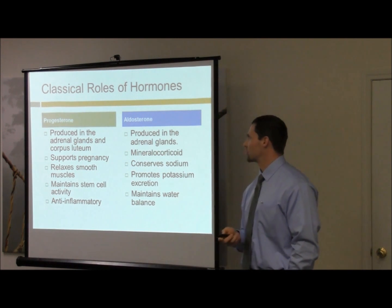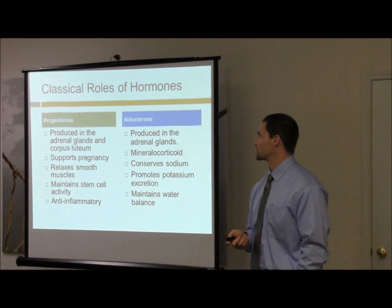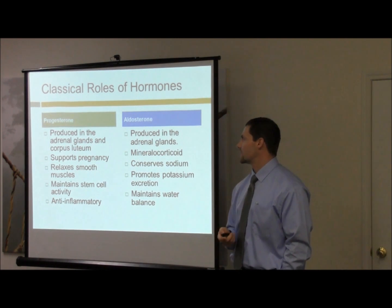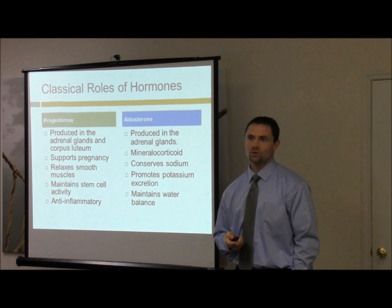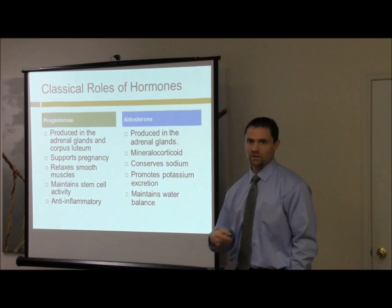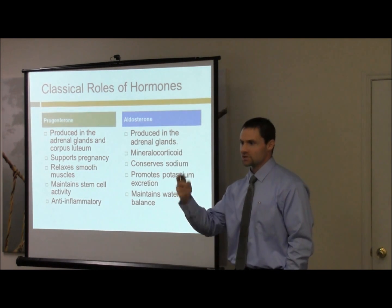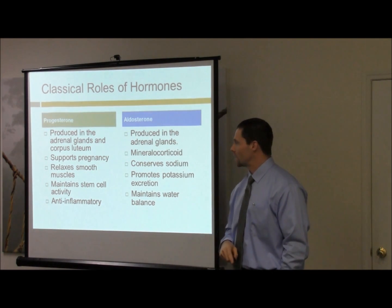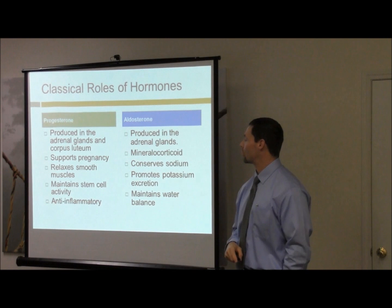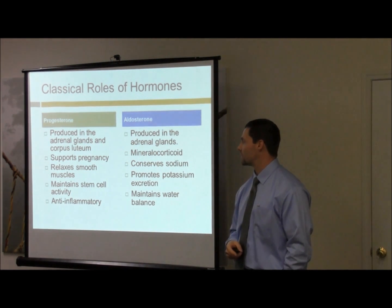Progesterone is produced in the adrenal gland, but in cycling females we're also looking at the corpus luteum. That's the reason you get the changes in the menstrual cycle. Its basic role is supportive of pregnancy.